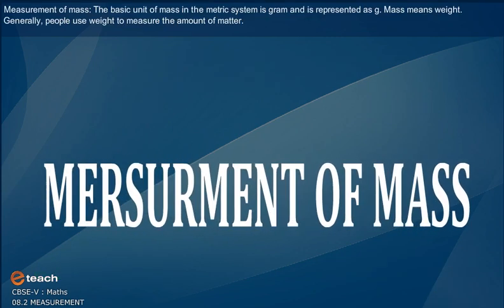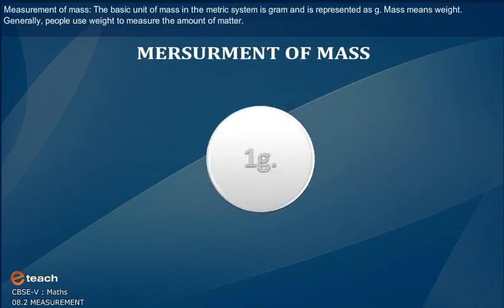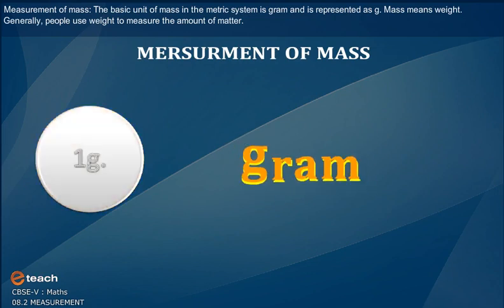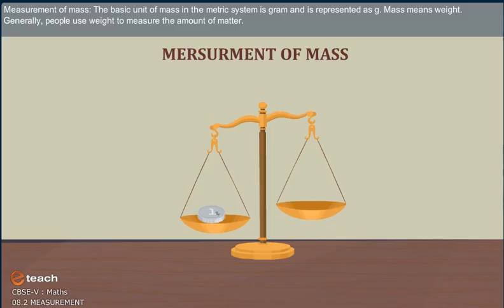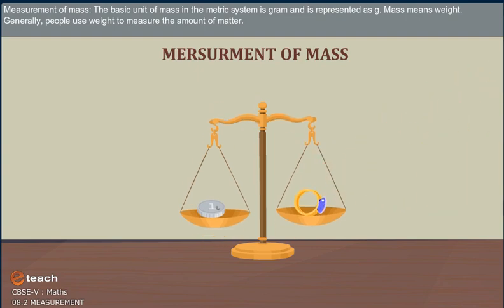Measurement of Mass. The basic unit of mass in the metric system is gram and is represented as G. Mass means weight. Generally, people use weight to measure the amount of matter.